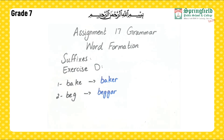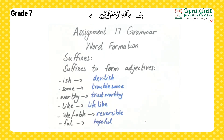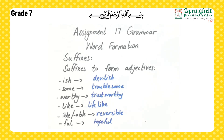Next is suffixes used to form adjectives. We can make adjectives by adding suffixes at the end of a root word. For example: -ish for resembling — devilish. -some for quality — troublesome. -worthy for deserving — trustworthy. -like — lifelike. -able/-ible for quality — reversible. -ful for quality — hopeful. -ous for quality — rigorous. -ious for quality — mysterious. So we add these suffixes to form adjectives.